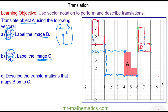Now I can recreate the object and label this image C. We can check it is right by performing the same translation from a different vertex. Moving 5 to the left and 4 units up — 1, 2, 3, 4, 5 and 4 units up — and that works.